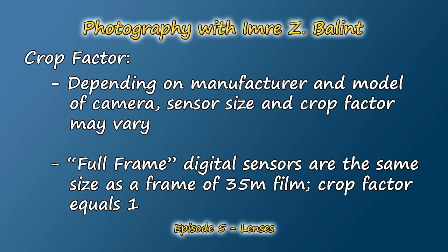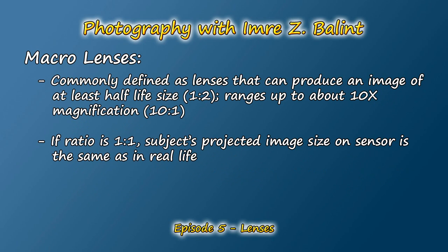Depending on the manufacturer and type of digital camera you have, the sensor size and crop factor will vary. Of course, there are full-frame digital SLRs that have a sensor equivalent in size to a 35 millimeter frame, in which case you have a crop factor of 1. For further information about the crop factor, check out my blog, as I've included some links there.